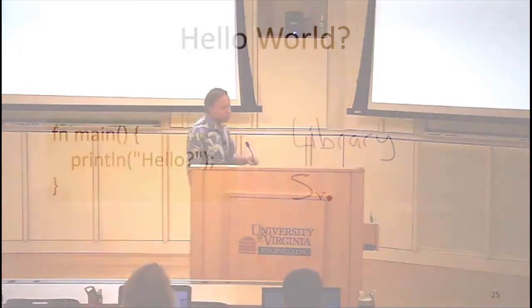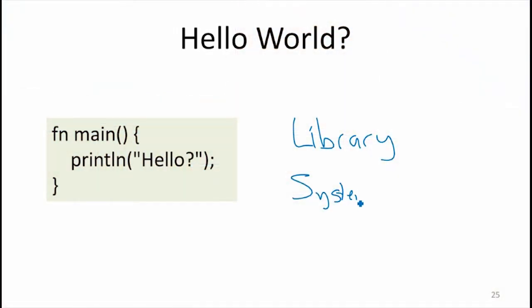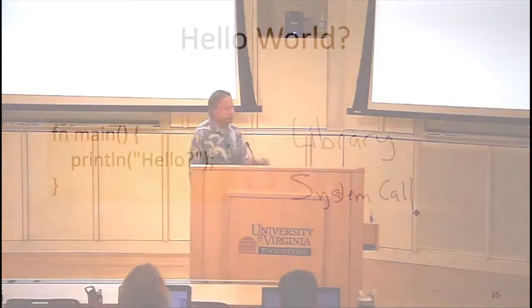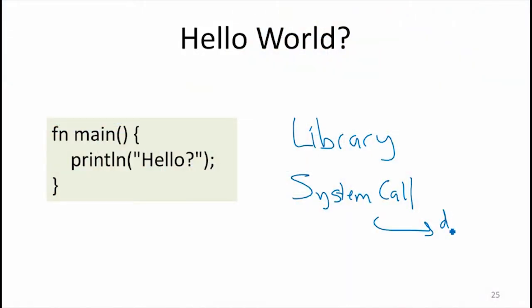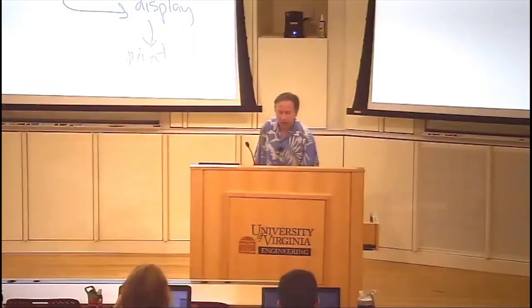So to actually have something like Print Hello World work, we've got the library code for dealing with strings, and that's not too bad maybe. But we've also got a system call to actually do anything that affects the outside world, like what's displayed on a terminal. We need a system call for that. That's going to go to the operating system. We need an operating system that can connect the display and print a character. So this is a really, really complex program.